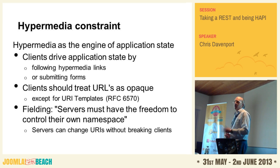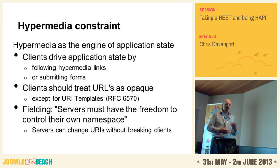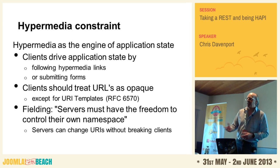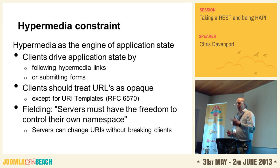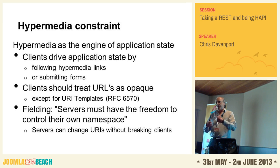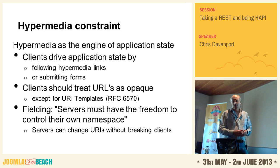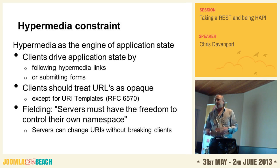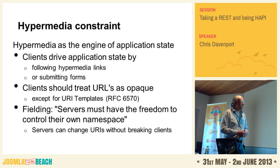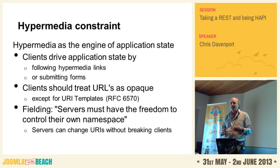It's important to realize that clients should not try to read any meaning into the structure of a URL — they should just treat them as opaque strings. There is one type of exception: URI templates, where the server gives you a template with substitution tags so you can put variables in to generate your URI. But clients should never try to attach meaning to any part of the URL, because servers need to be able to change URLs whenever they want to without breaking the clients. As Fielding puts it, servers must have the freedom to control their own namespace.